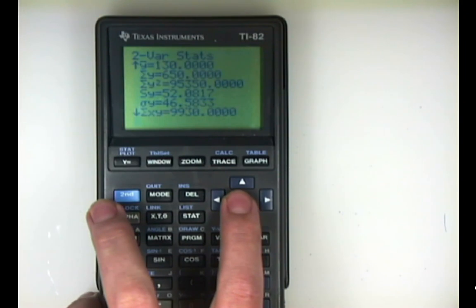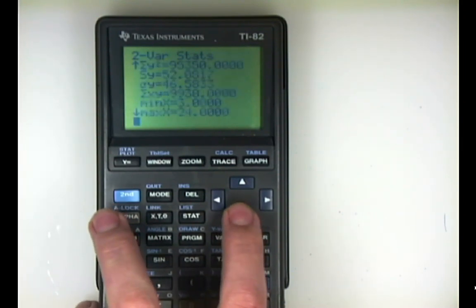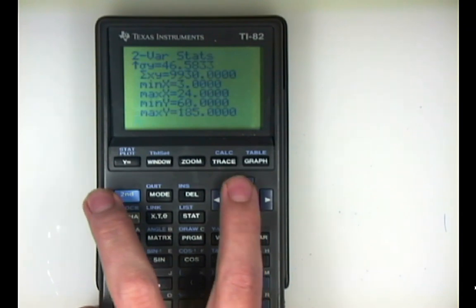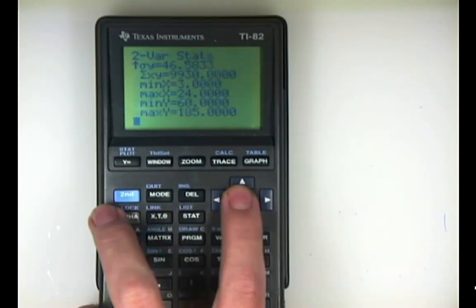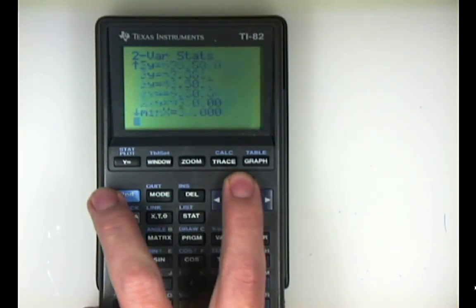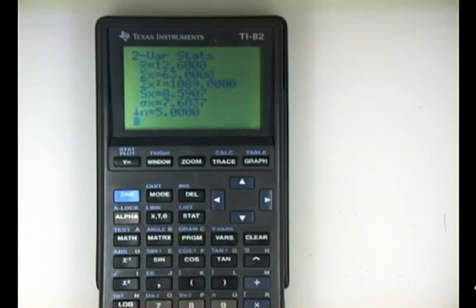It brings up all the x variable information first and then the y variable information. Sy is the standard deviation of the y variable, and you get your sum of xy's and all that good stuff. It doesn't tell you the quartiles in two-variable statistics because usually you only want this when you're going to do a regression analysis anyway.